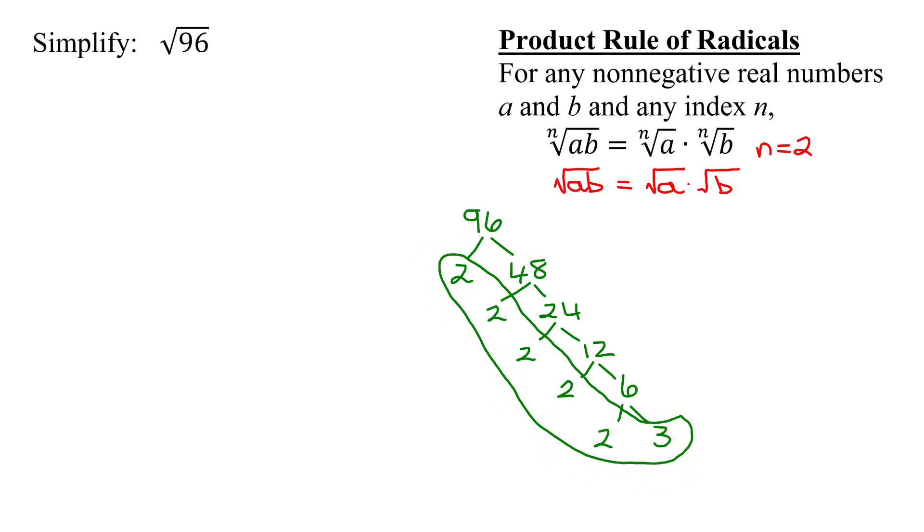Now I'm going to group them to make either perfect squares or non-perfect squares. I'm going to group these two twos together and these two twos together. And then finally my leftovers are 2 times 3.